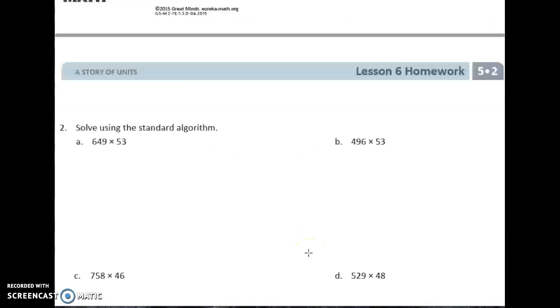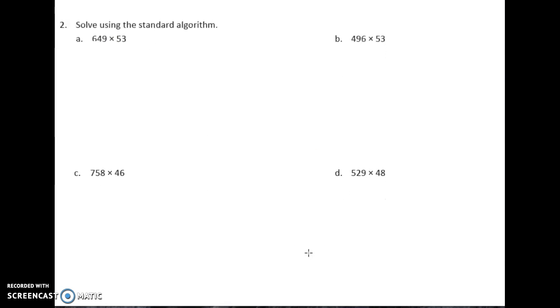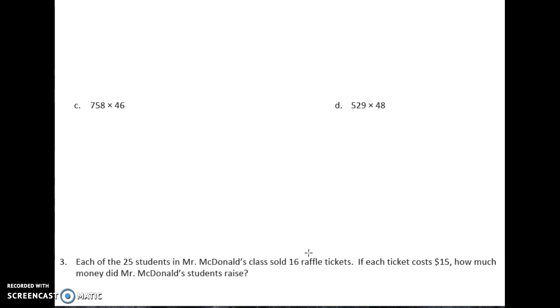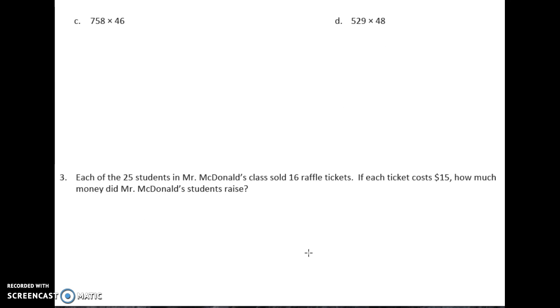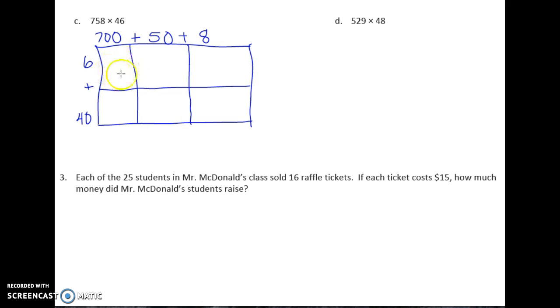Now let's take a look at the next page. This one's saying to solve using the standard algorithm. Let's take a look at C. So if we've got three place values, this one's going to be 700 plus 50 plus 8, right? It said you do a standard algorithm but I'm doing the area model just because this one's more complicated. 6 plus 40. So this is going to have two parts to it. This one's going to have three parts to it.